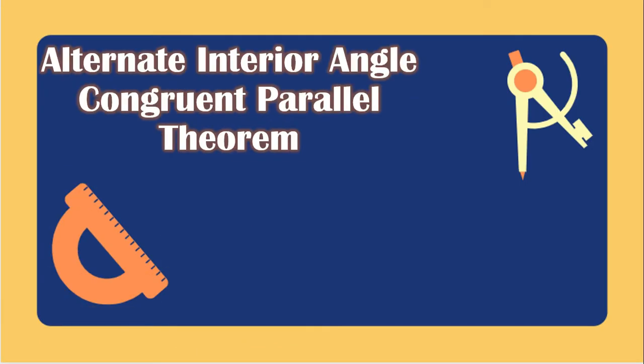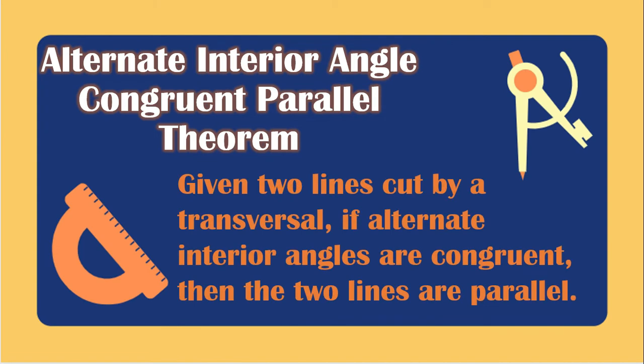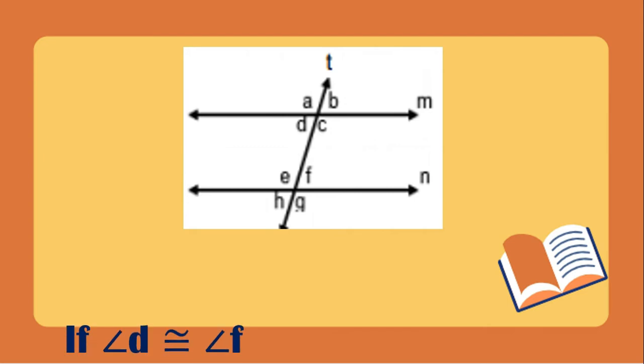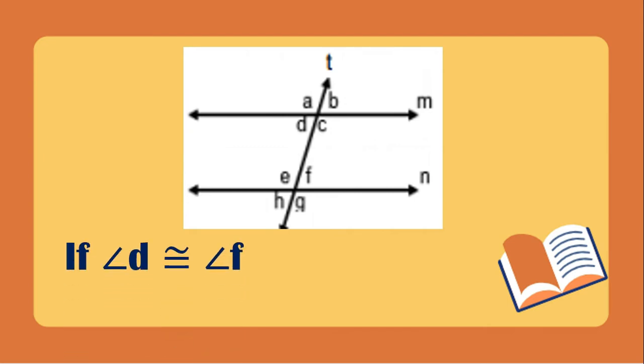The alternate interior angle congruent parallel theorem states: given two lines cut by a transversal, if alternate interior angles are congruent, then the two lines are parallel. In this figure, angle D is congruent to angle F because they are alternate interior angles.